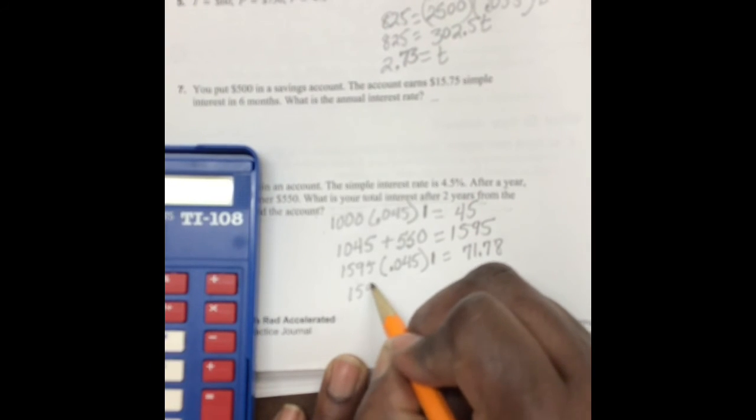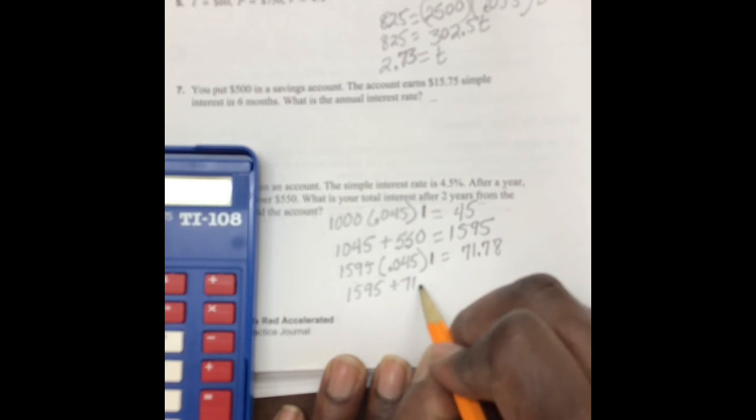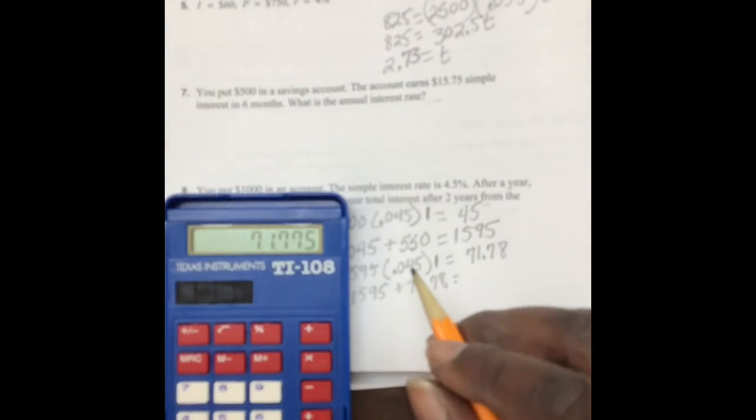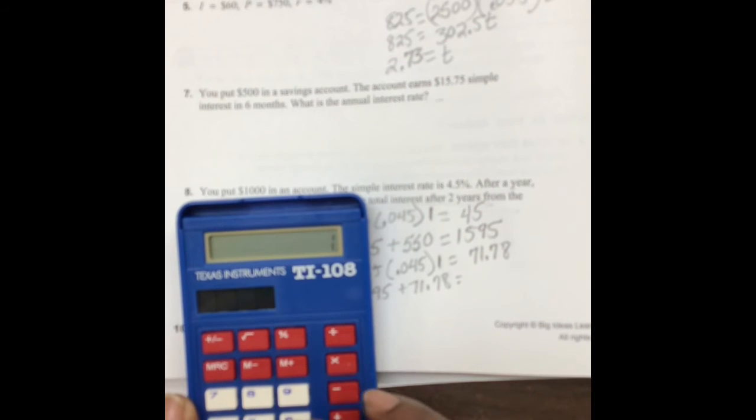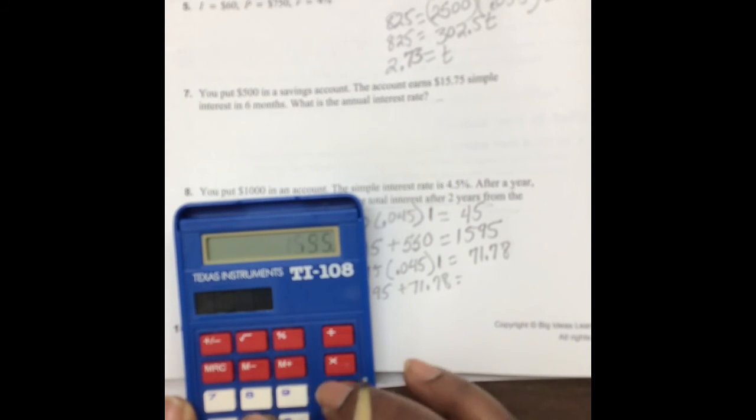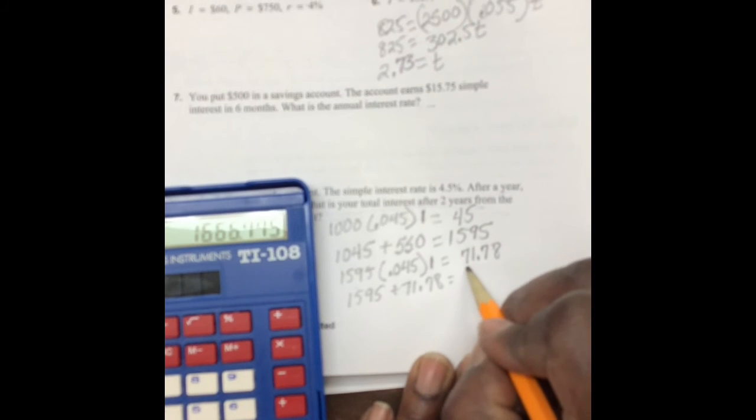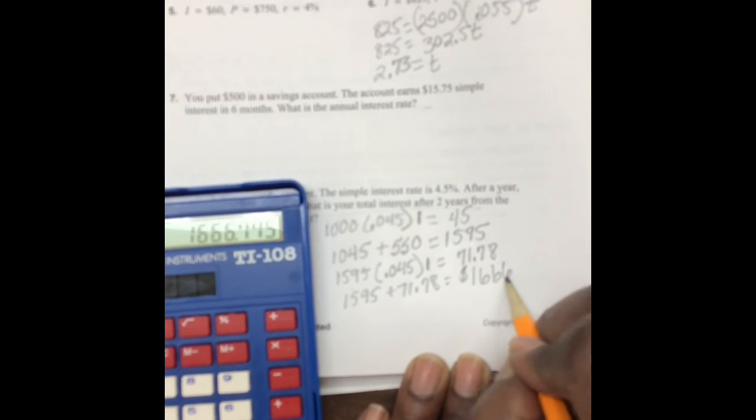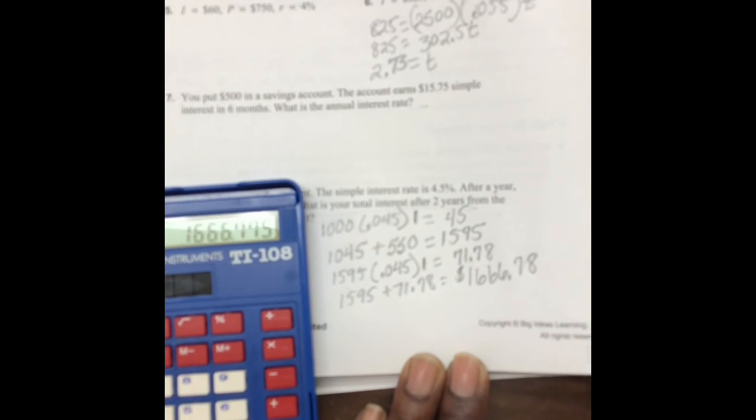This is the original amount at the beginning of the year plus the interest, and your balance is $1,666.78.